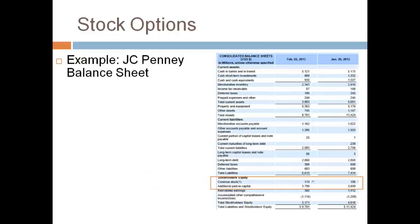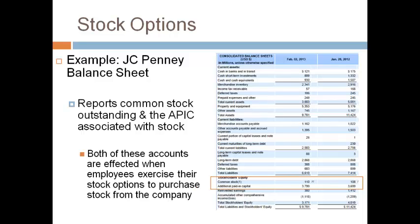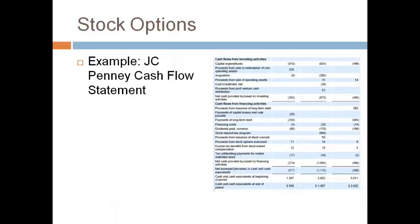Let's take a look at how JCPenney reports employee stock options. Stock options are associated with ownership and are reported in the owner's equity part of the balance sheet. Common stock is increased when the employee exercises the option and purchases the stock. The cost of stock options is included in operating expenses on an income statement. A company does not generally show it in a separate line item, so we did not present an income statement in this video.